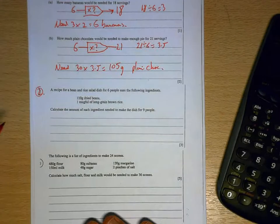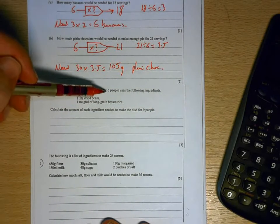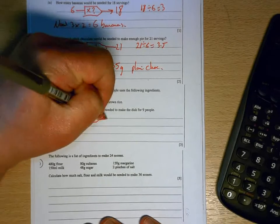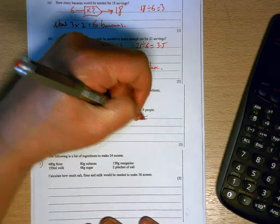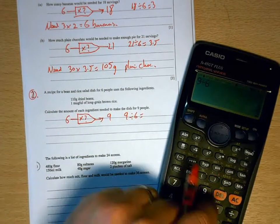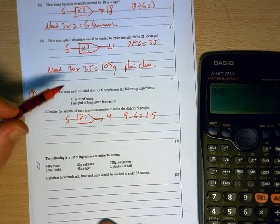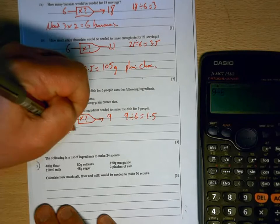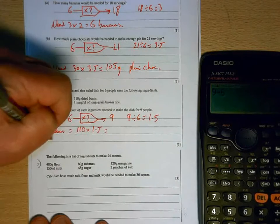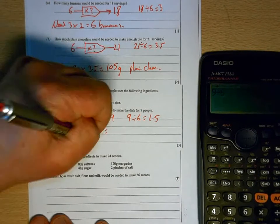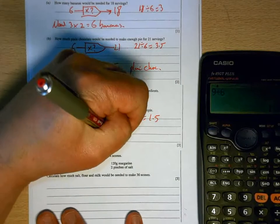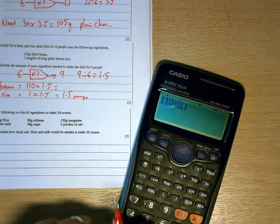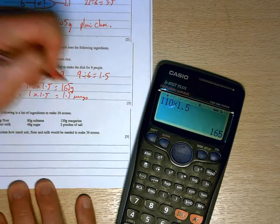Second question. Same idea again. Here's a recipe for 6 people. I need to scale it up for 9 people. So what have I got to scale it by? What is my multiplying factor? So I'm going to do 9 divided by 6. 1 and a half. So everything has to be multiplied by 1.5. So beans would be 110 times 1.5 and the rice would be 1 times 1.5. So we'd have 1.5 mugs and 165 grams of beans.